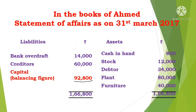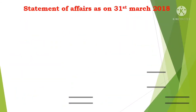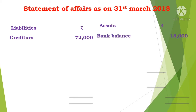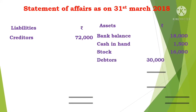Next, prepare the closing capital. Statement of Affairs on 31 March 2018. On the liability side: creditors 72,000. On the asset side: bank balance 18,000, cash in hand 1,500, stock 16,000, debtors 30,000 less provision 5% which is 1,500, so 30,000 minus 1,500 equals 28,500. Plant 80,000 less depreciation 10% (8,000), so 72,000.